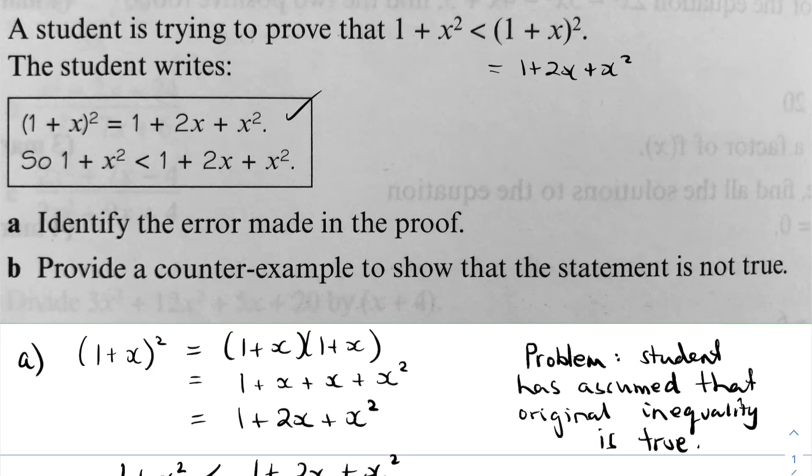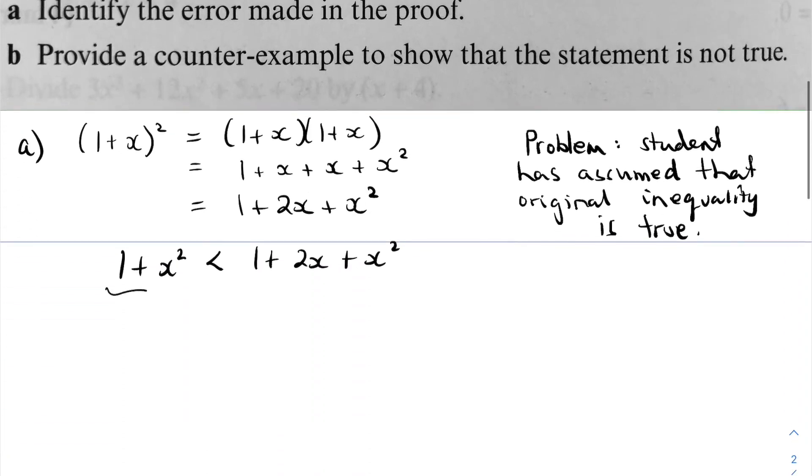But I think what the question is actually trying to get at is that we've got 1 plus x squared, and then 1 plus x squared also on the right-hand side, but with this additional 2x. So let's have a look from that perspective. Is it true that 1 plus x squared is less than 1 plus 2x plus x squared? It is true if 2x is positive.